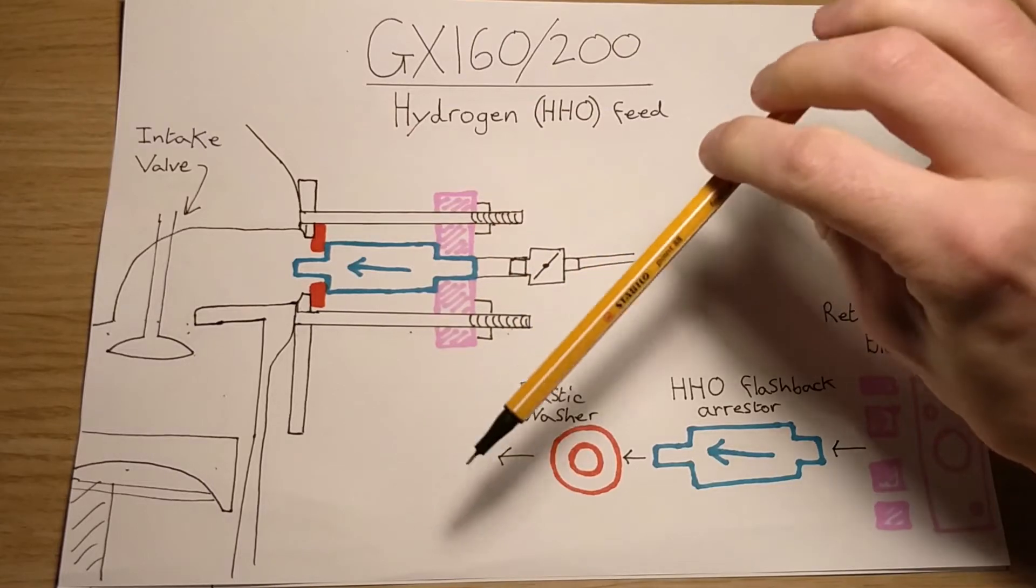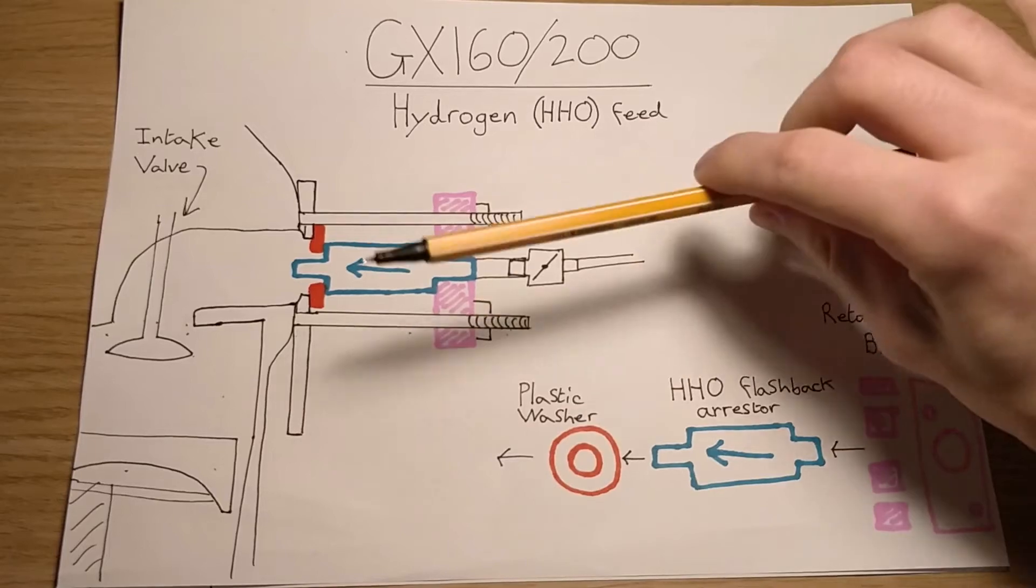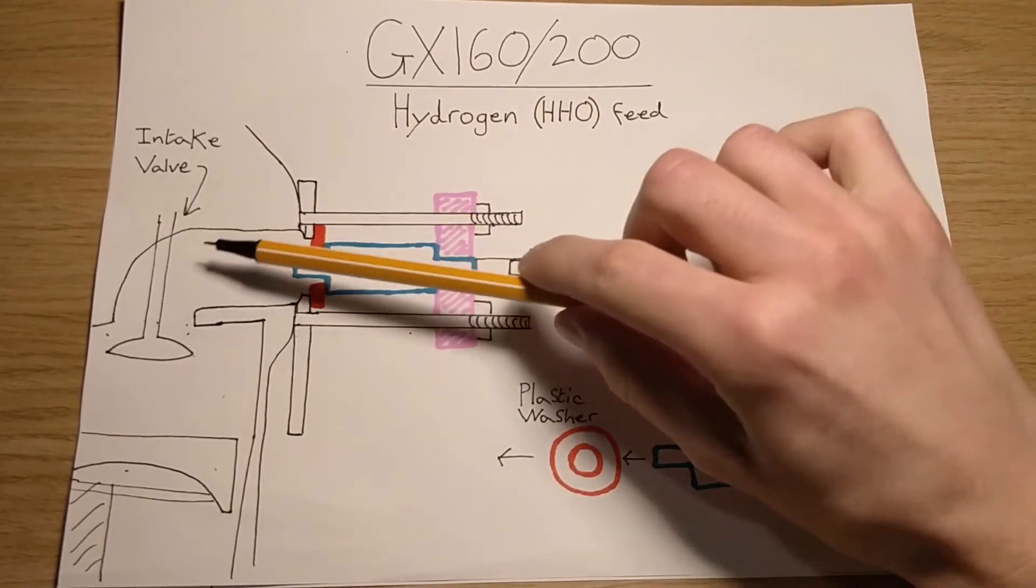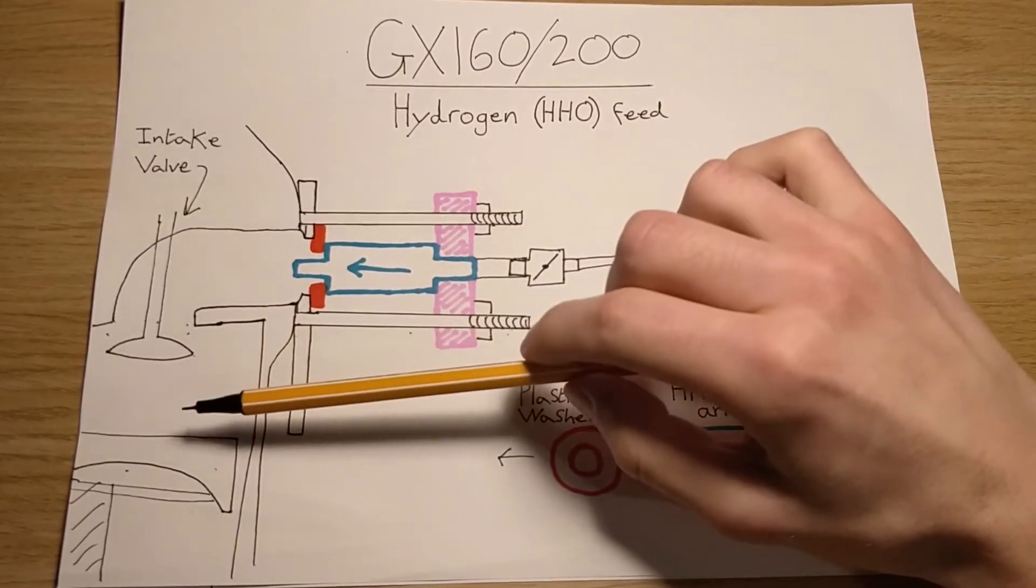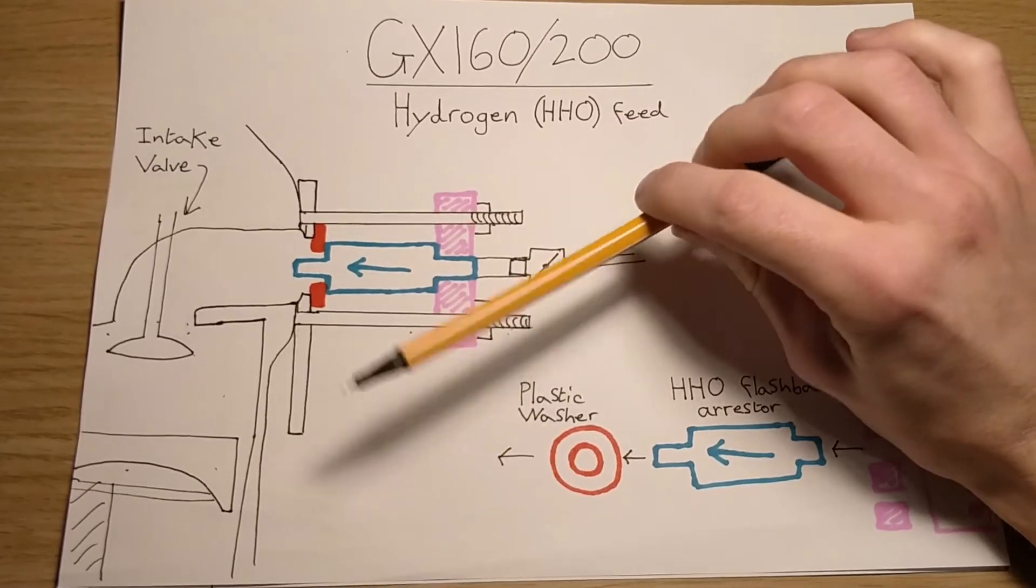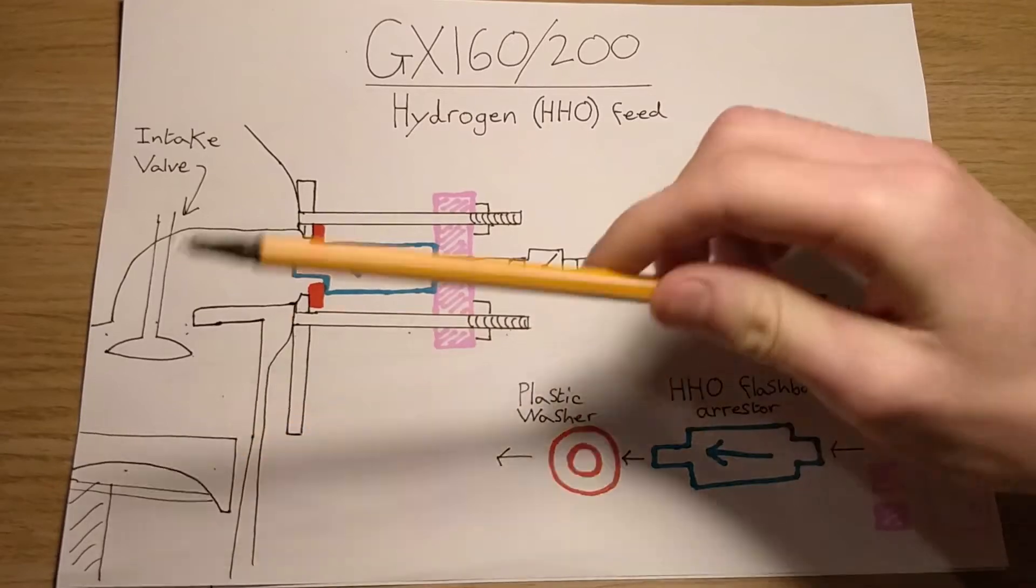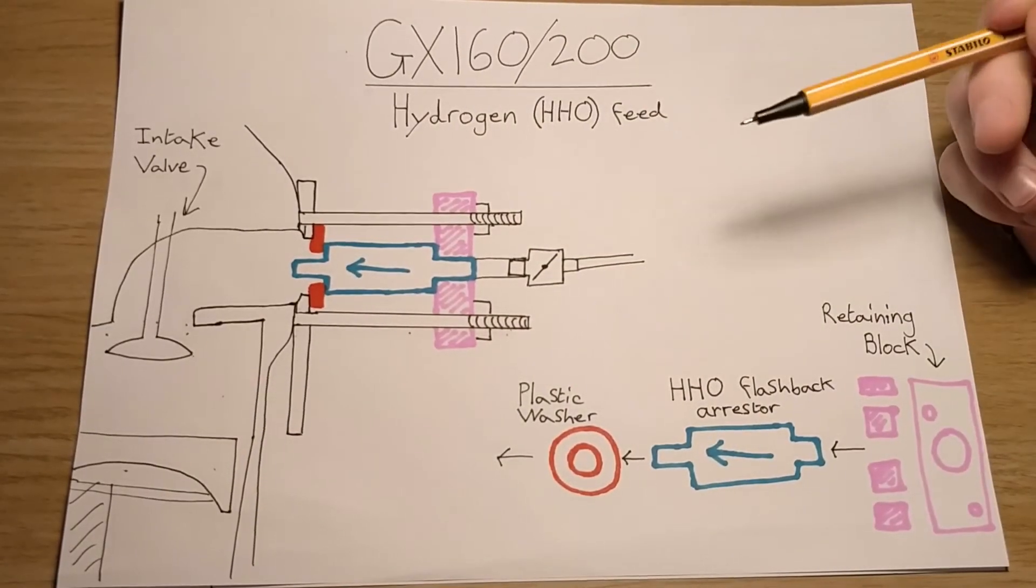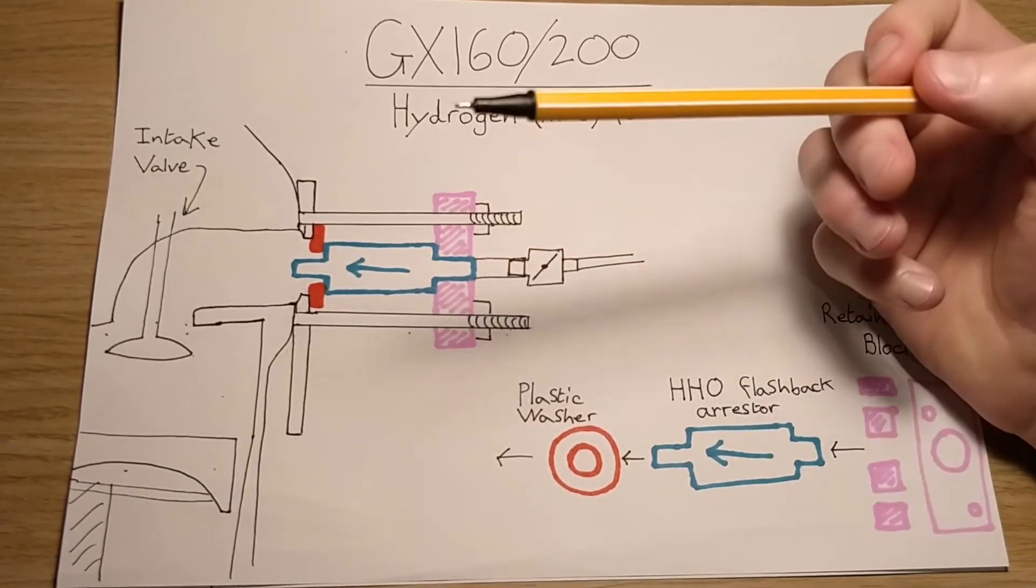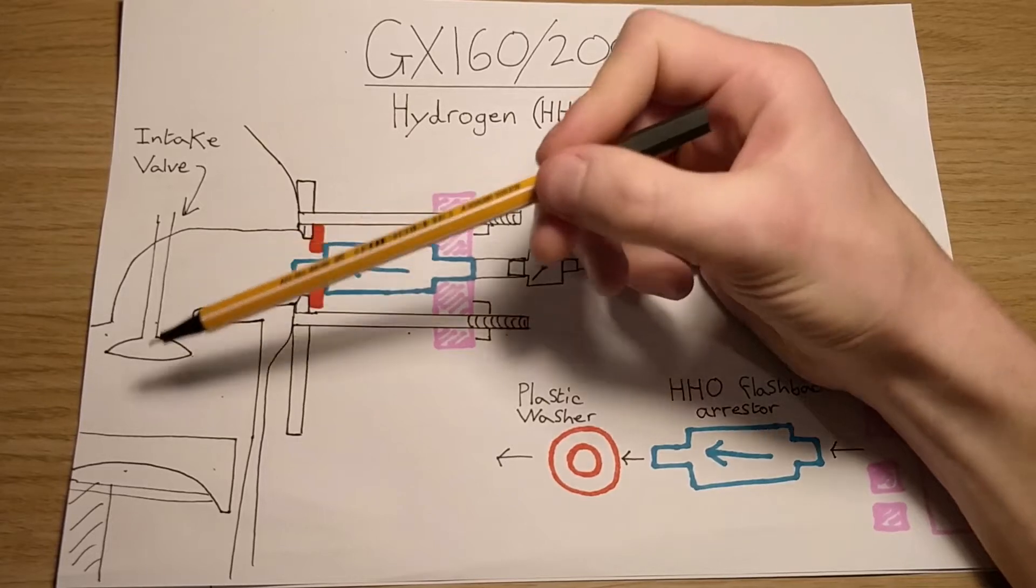So we need to control the amount of hydrogen going through. The less hydrogen, the less HHO that's going into this area, the less it's going to get into the port, into the cylinder, and obviously going to be combusted. So if we have less, less speed. More HHO is going to have more engine speed, more combustion.